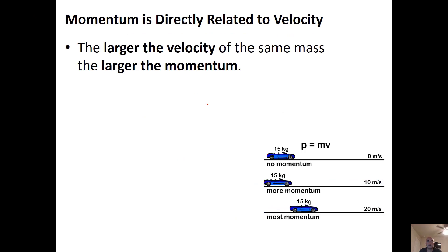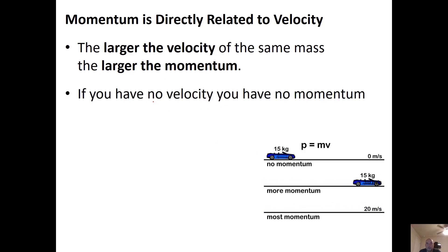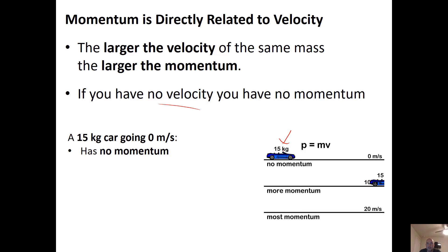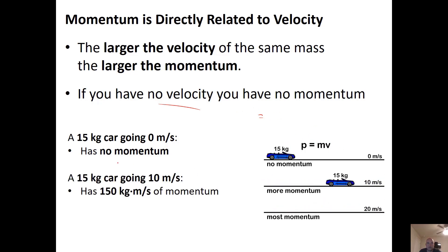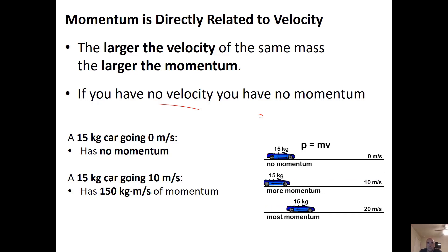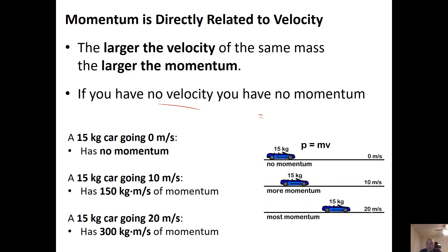Momentum is directly related to velocity. The larger the velocity of the same-mass object, the larger the momentum. An object at rest has zero momentum because anything times zero is zero. A 15 kg car going 10 m/s has momentum of 150 kg·m/s, and going 20 m/s it has 300 kg·m/s.